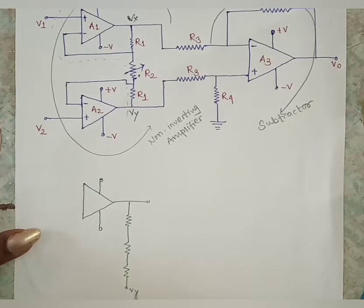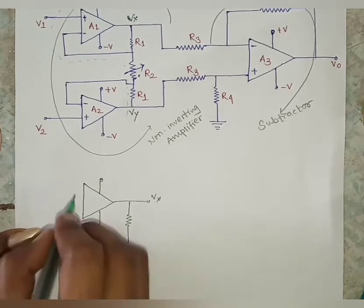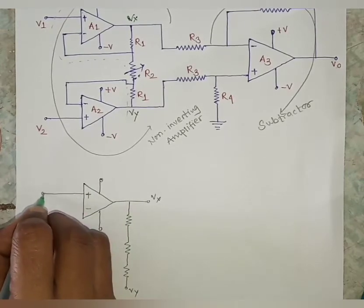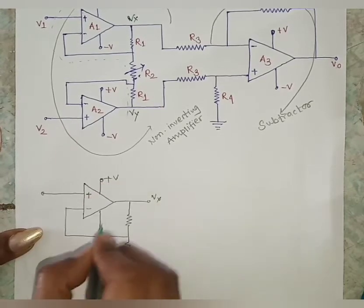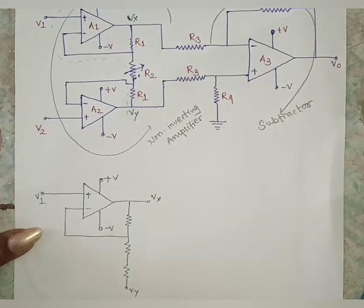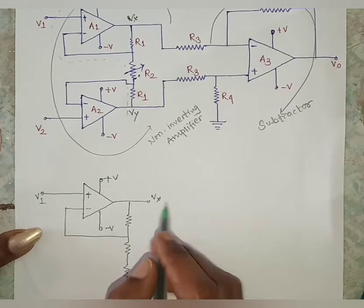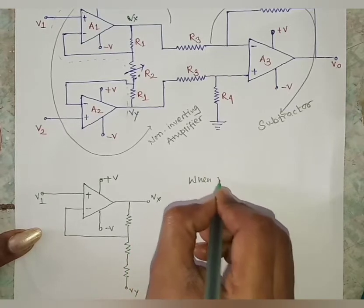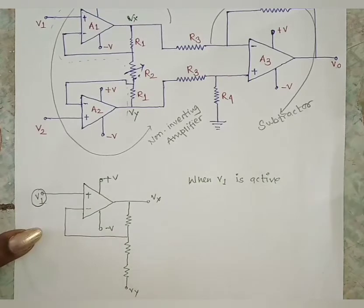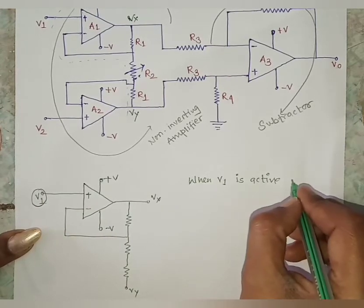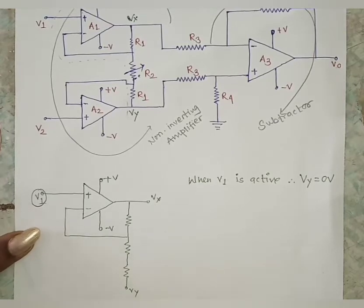We have Vy and Vx at the plus and minus terminals. Now, when V1 is active, Vy is at 0 volts. We name this condition Vx prime (Vx'). We will now derive the equation for Vx' — applying the voltage division rule (VDR). Since Vy = 0, this terminal is connected to ground.